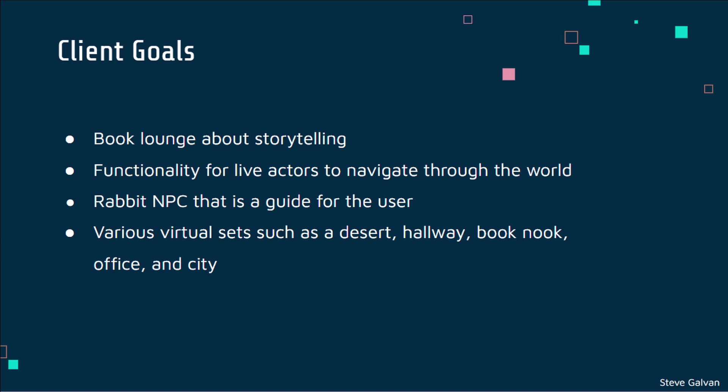Some of the goals that our liaison discussed include a book launch that teaches the user about storytelling in an interactive manner, as well as the functionality of live actors being able to navigate through the world through green screen technology. A rabbit NPC, or non-playable character, was developed to act as a guide for the user, utilizing artificial intelligence to roam the environment and interact with the user. Various virtual sets were also requested, such as a desert, a hallway, a book nook, office, and a city.